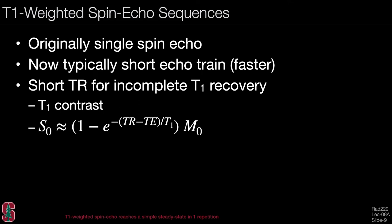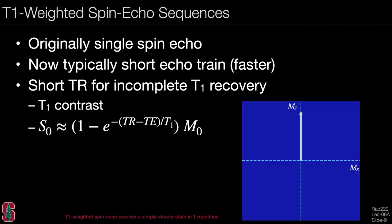For T1 weighted spin echo sequences, because we have a 90 degree pulse, these are quite easy to analyze. Originally a single spin echo was used, and now it is more typical to use a short echo train. We use a short repetition time for incomplete T1 recovery, resulting in T1 contrast. The signal is essentially what recovers over one TR based on T1 recovery. In animation, spins with two different T1s have different amounts of recovery, but after just one TR they reach the same steady state with steady state T1 contrast.